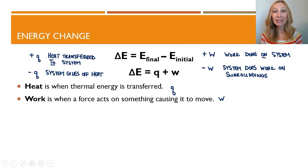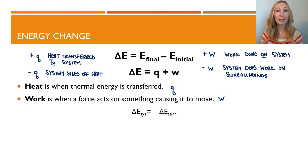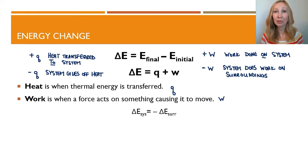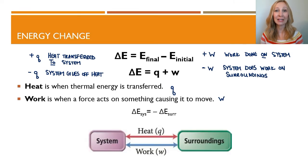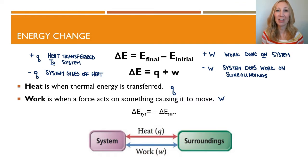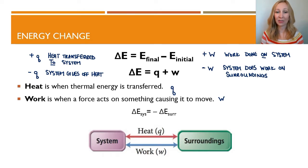Remember, the positives and negatives are very important. The delta E of the system is going to equal the negative delta E of the surroundings. What that means is: if we're losing energy in the system, the surroundings are gaining the exact same amount of energy. One is losing it, the other is gaining it — or vice versa.